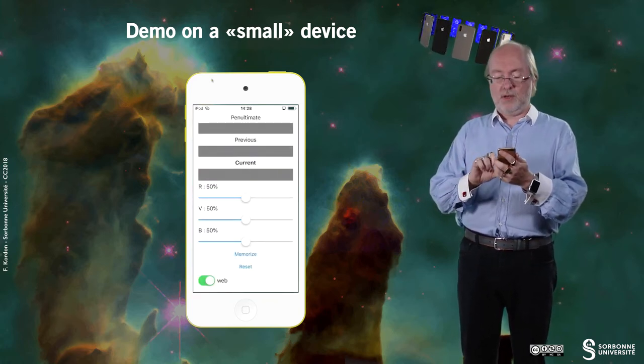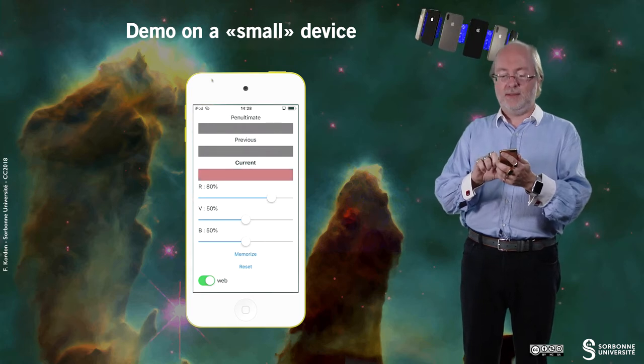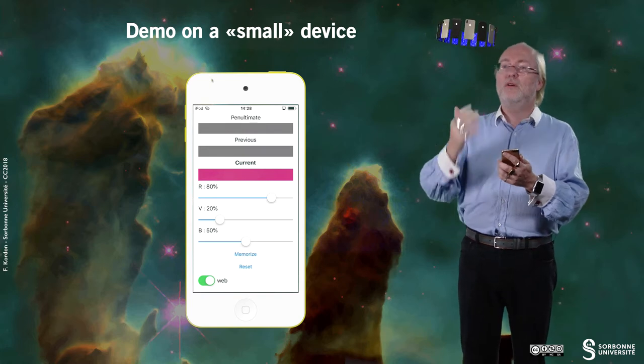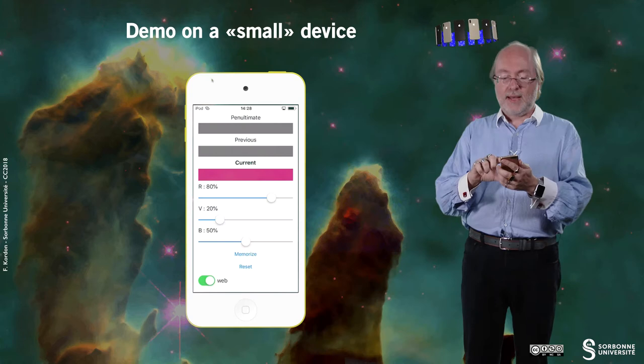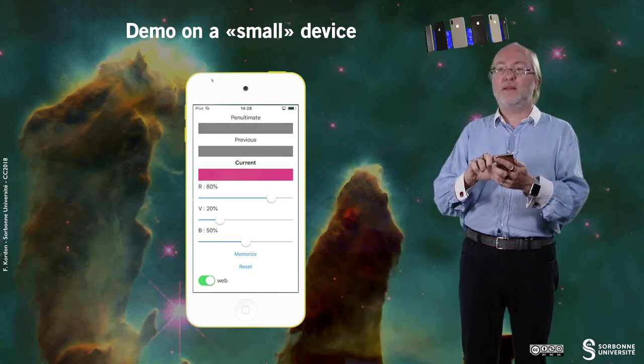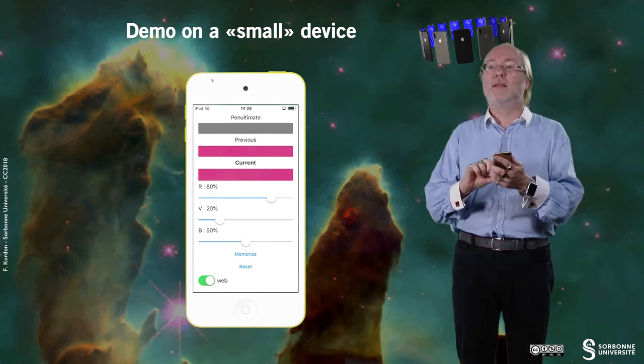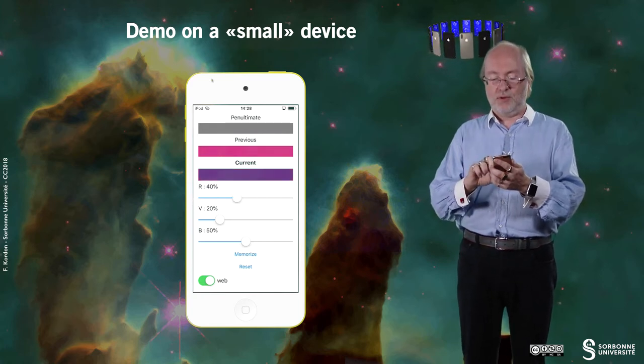You see that I can play with color by just setting the level of red, green and blue, and if I tap on Memorize, then I can remember the color.